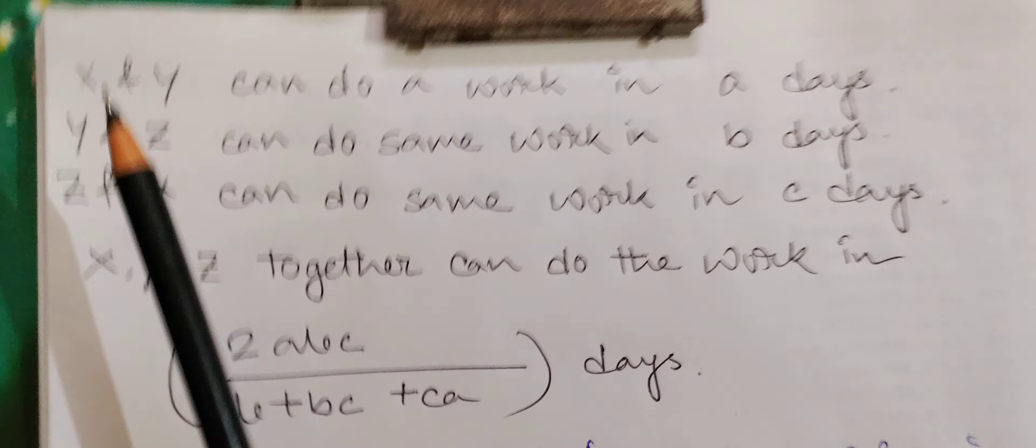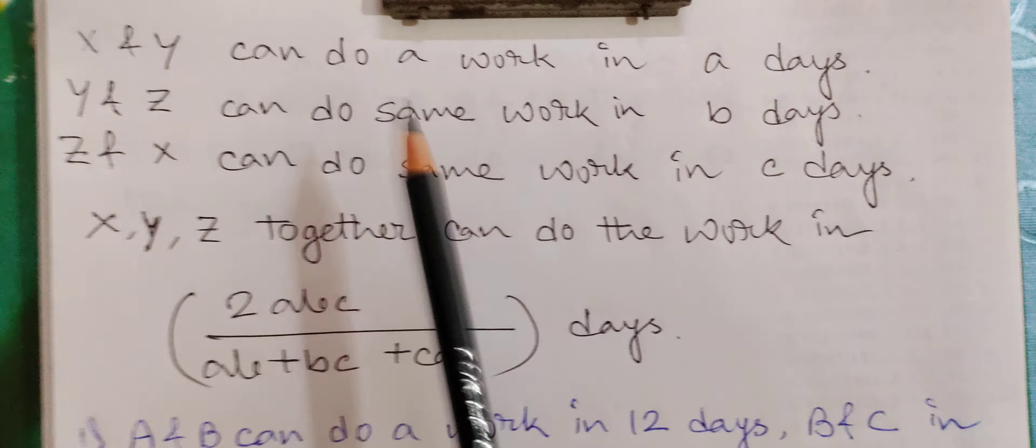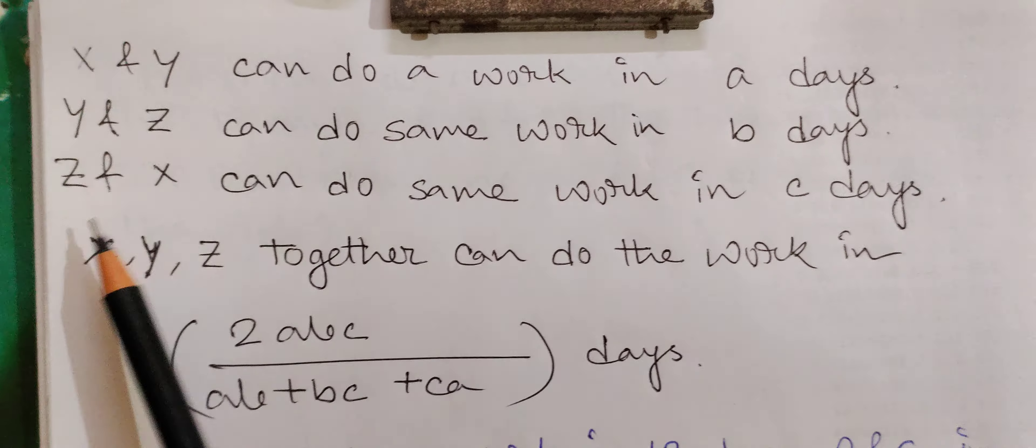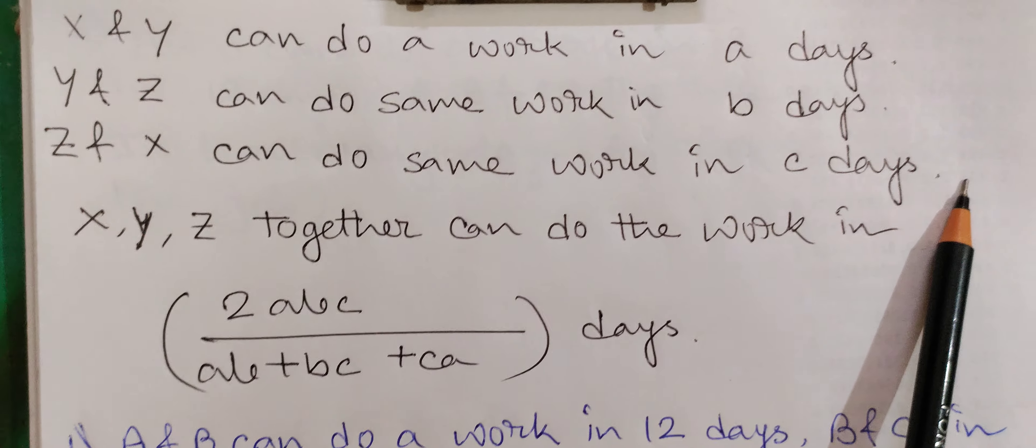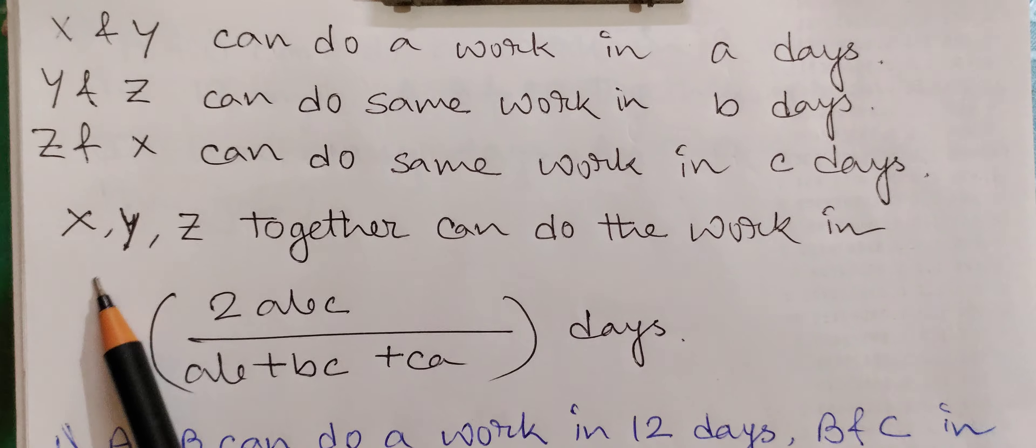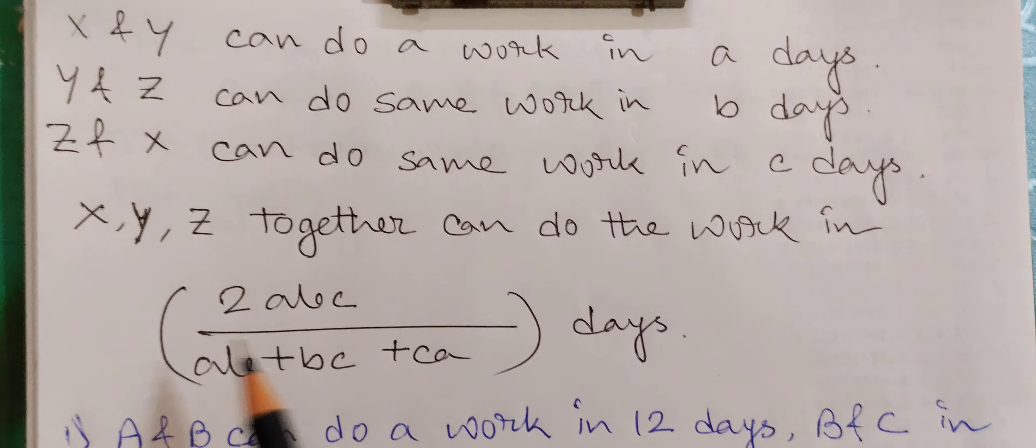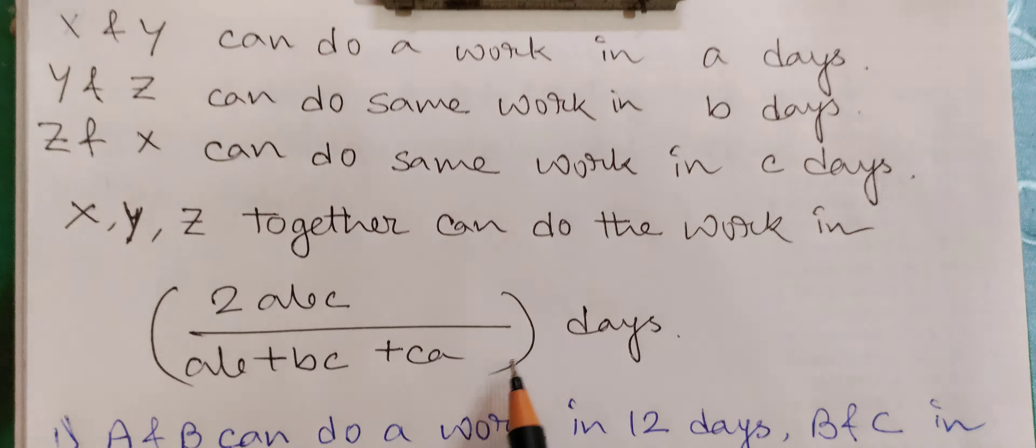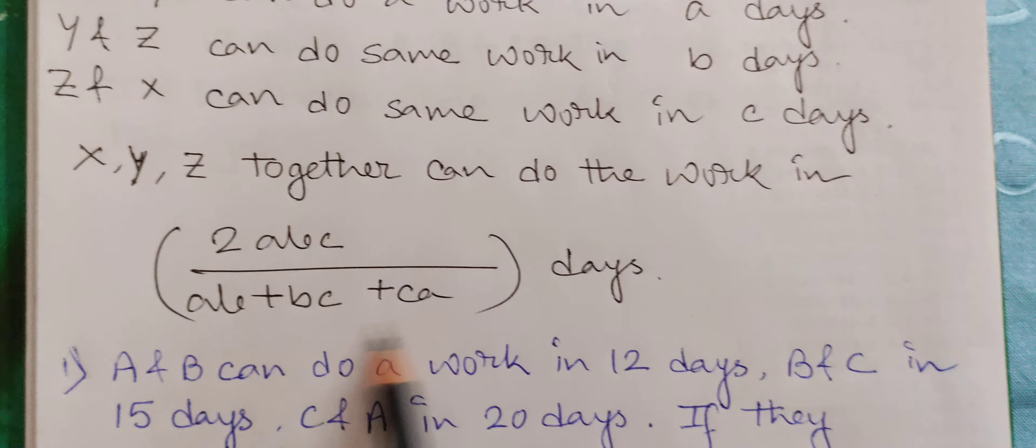X and Y can do a work in A days, Y and Z can do a work in B days, and Z and X can do the same work in C days. Now if all three work together, X, Y, Z, they can complete the work in 2ABC divided by (AB plus BC plus CA) days. So this is the formula.